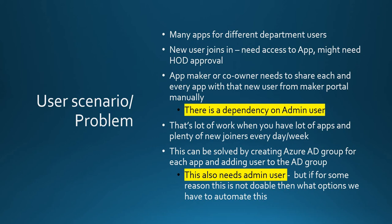The typical process is that HR or admin will inform the IT team, or whoever is the maker or owner of the app, asking for permissions to be granted. Only the app owner or admin has permission to share the app. If you have many apps, many departments, and lots of users joining every day or week, that becomes a lot of work for the admin.